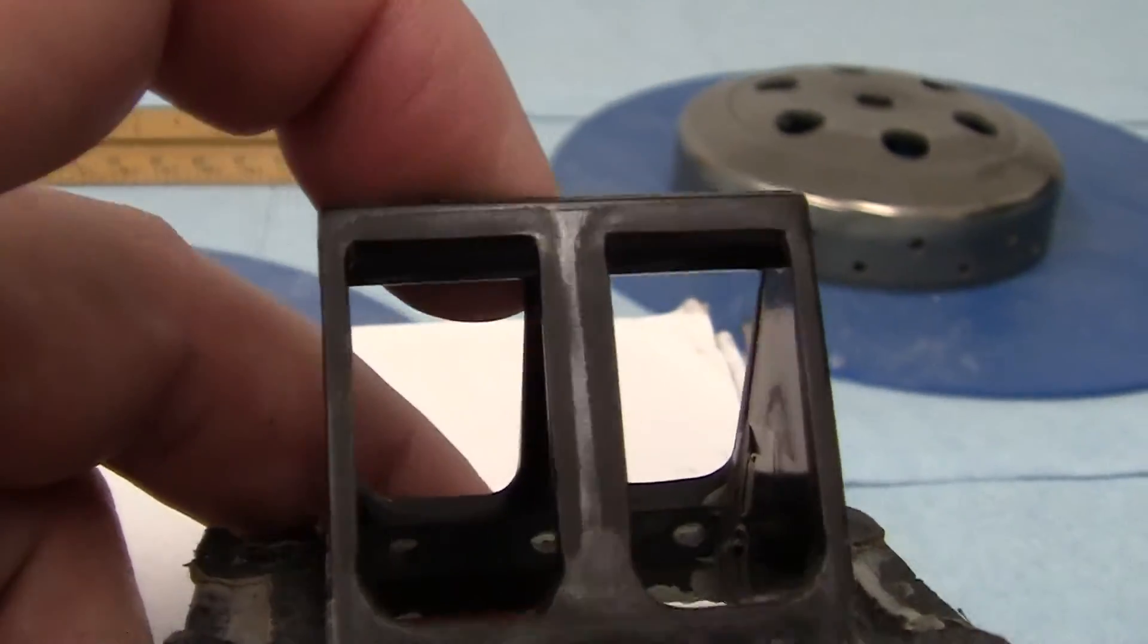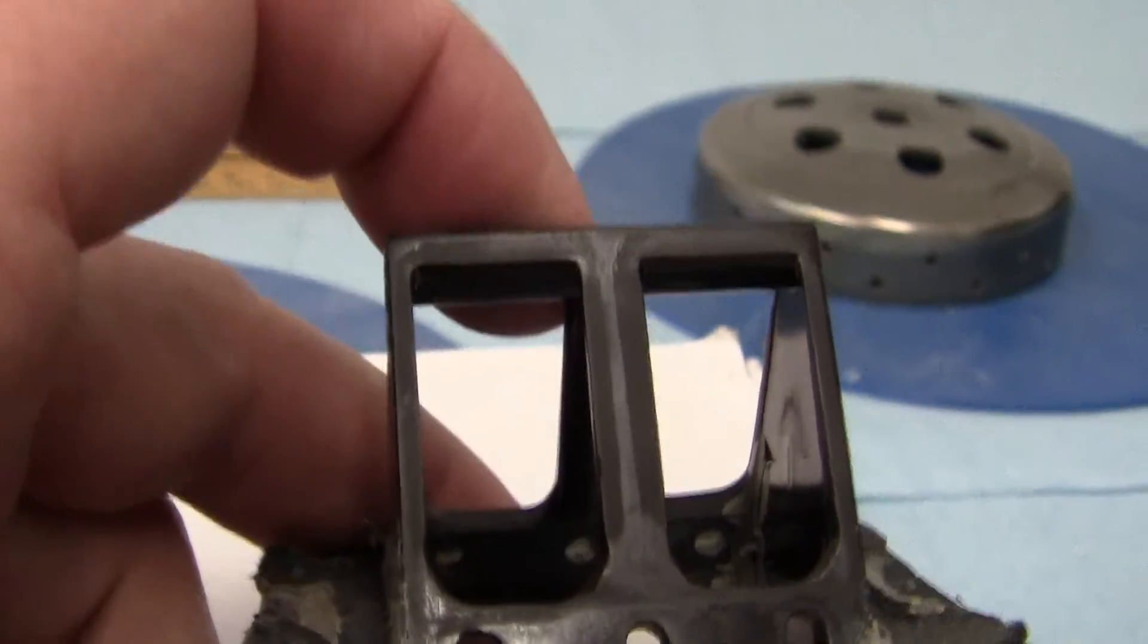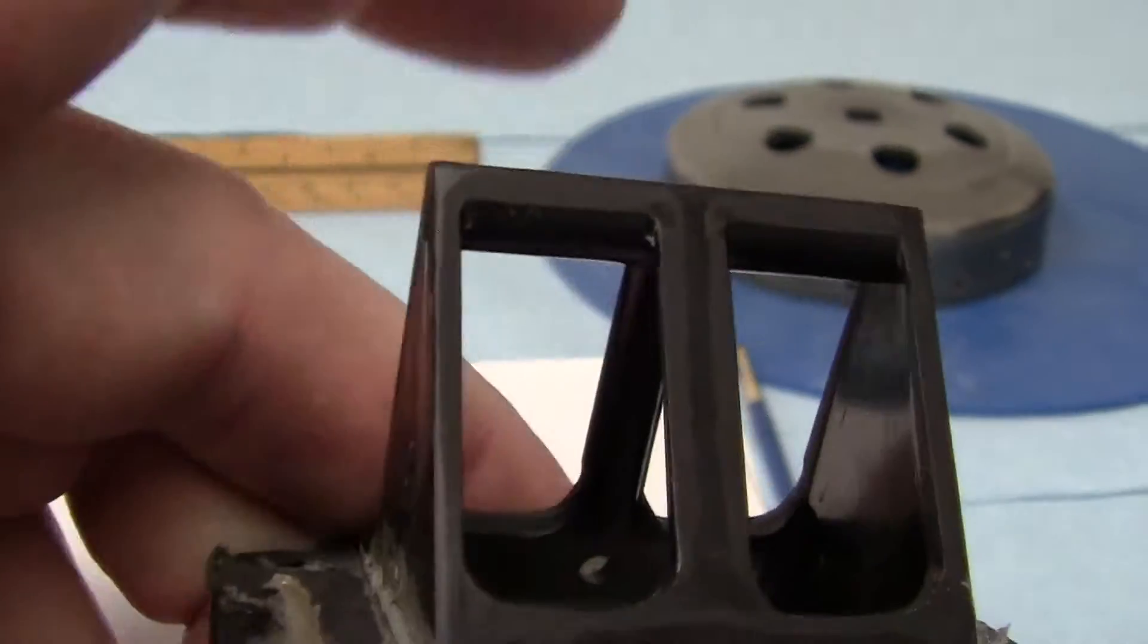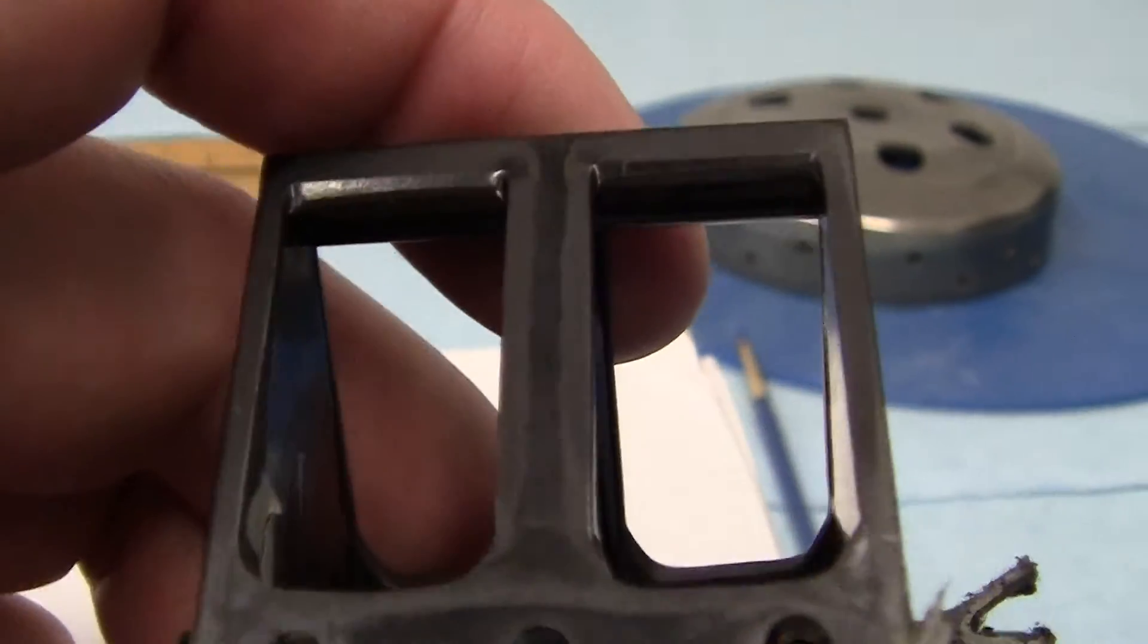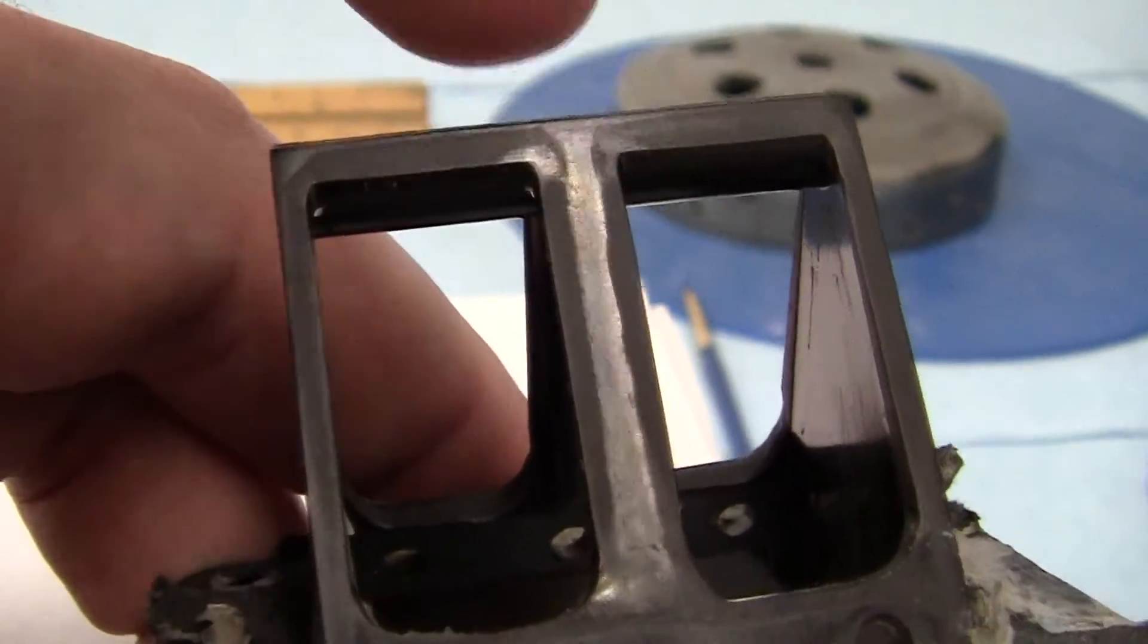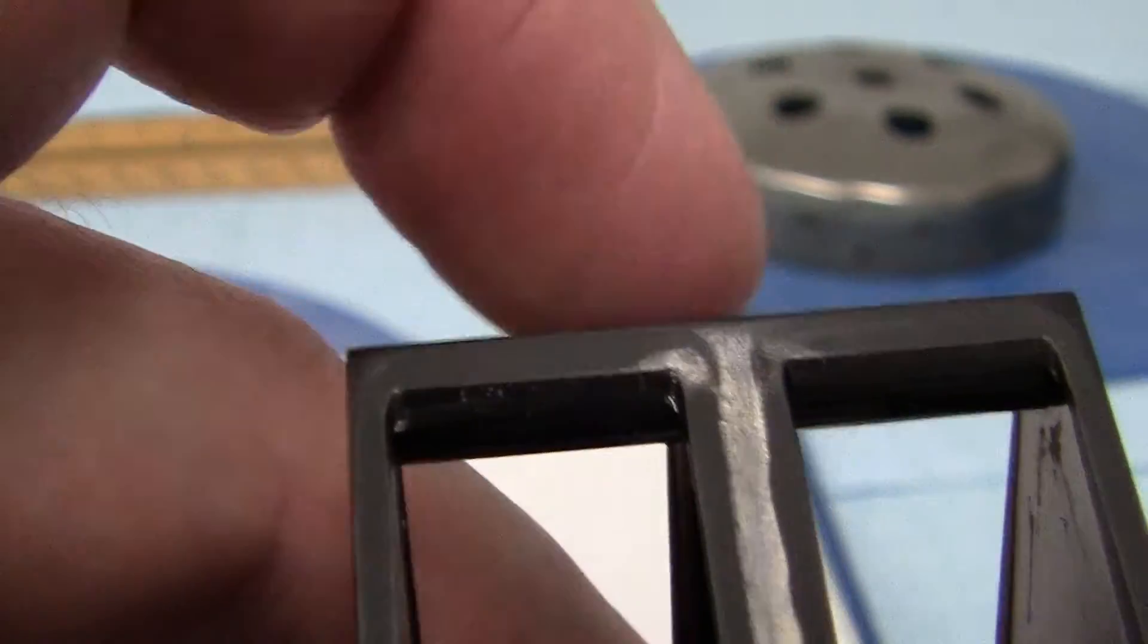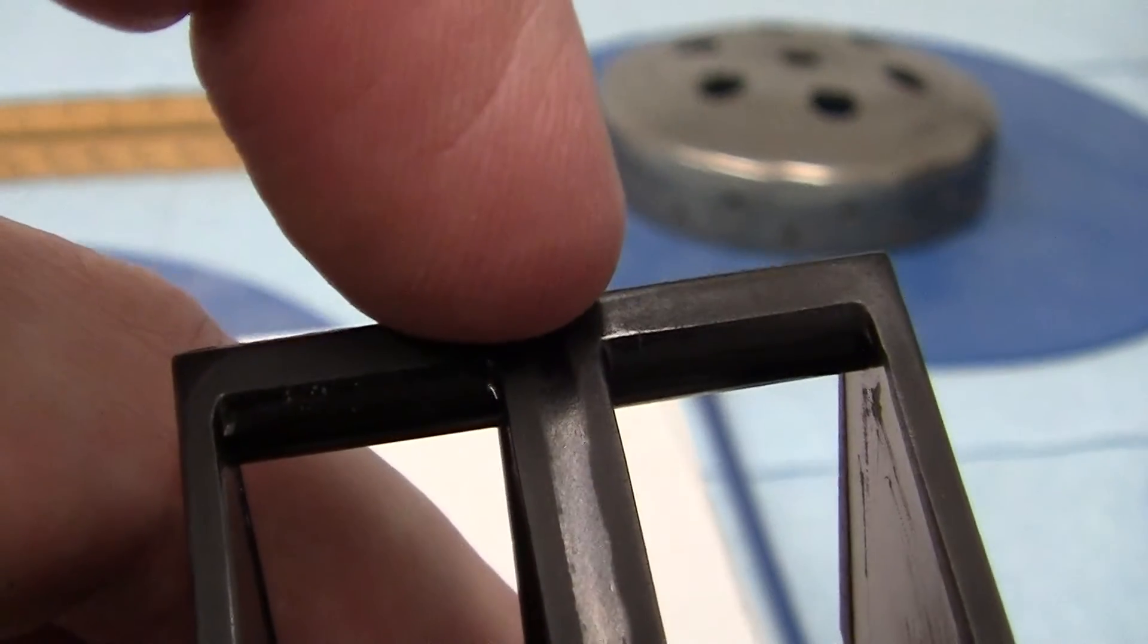If the reeds are sealing against here on this side, and we turn it over to this side... If the reeds are not sealing up in here, you can see it's not sealing right there in that right-hand corner, and it's not sealing right here.